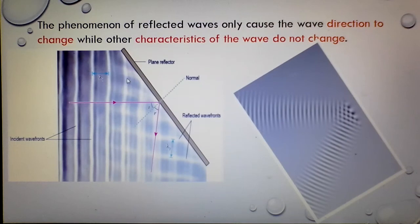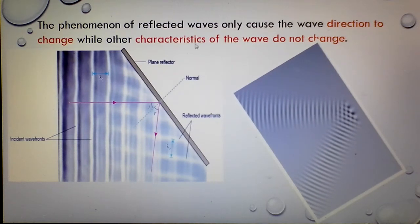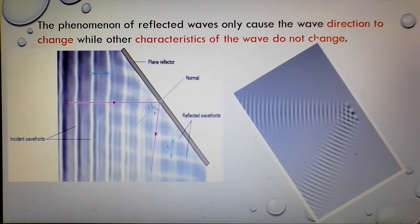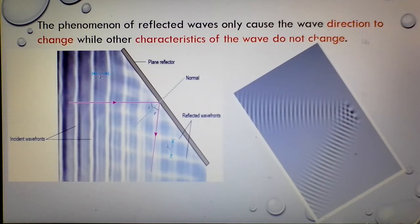The phenomenon of reflected waves only causes the wave direction to change, while other characteristics of the wave — speed, wavelength, and frequency — do not change. For the reflection phenomenon, there is no change in speed, wavelength, or frequency. The only characteristic that changes is the direction.